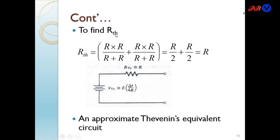For finding R_Thevenin in the slightly unbalanced case, we calculate R_Thevenin = (R·R)/(R+R) + (R·R)/(R+R), ignoring ΔR because its value is very small compared to R. Therefore, R_Thevenin equals R. This gives the approximate Thevenin equivalent circuit for a slightly unbalanced bridge.